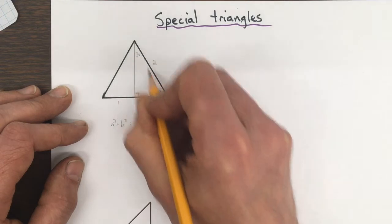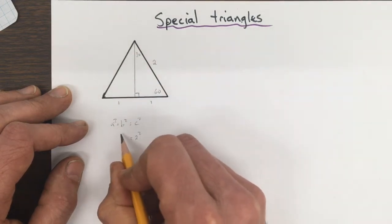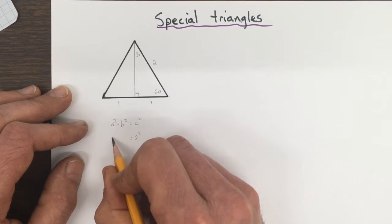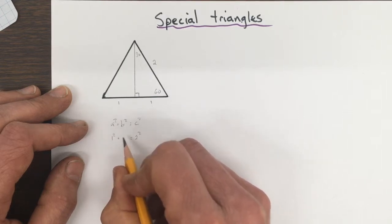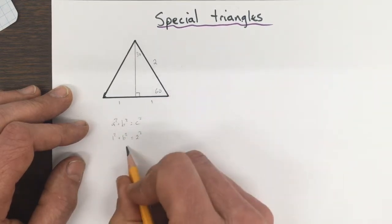So the long side is 2, so 2 squared equals 1 squared plus b squared. So the 1 has to go to this side.